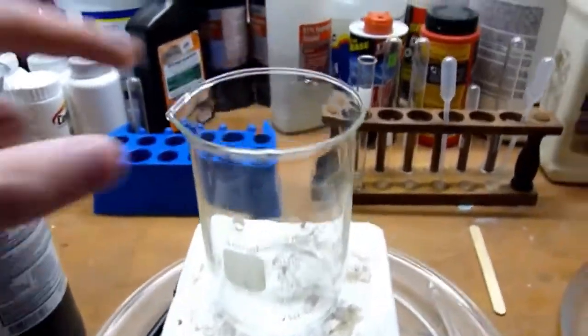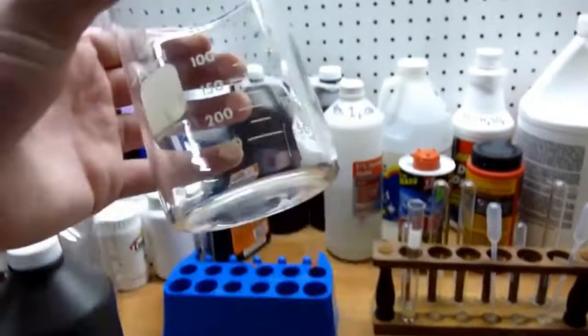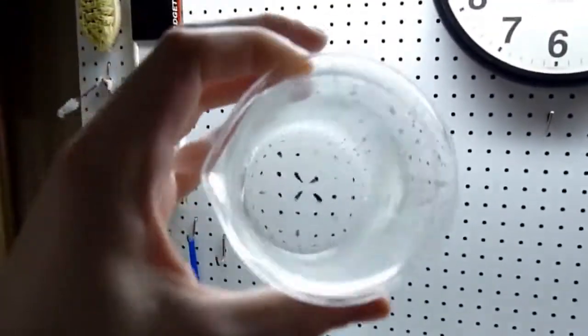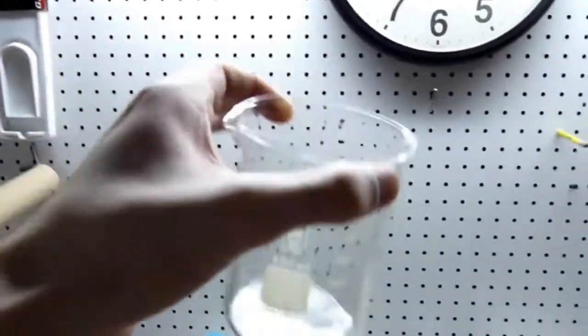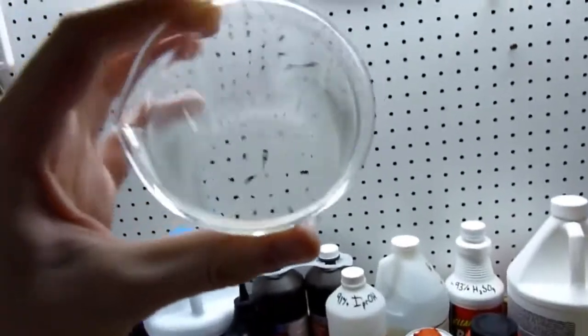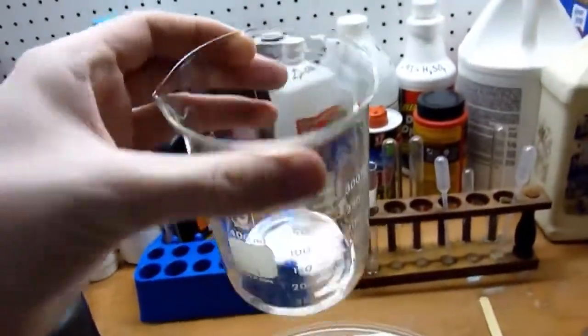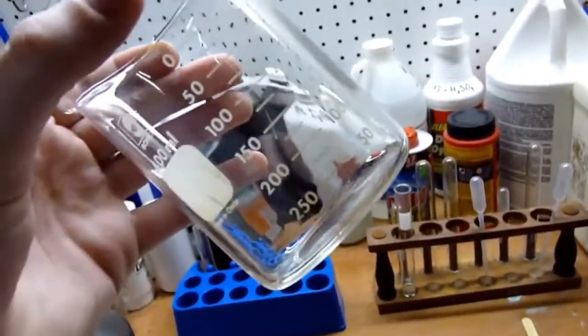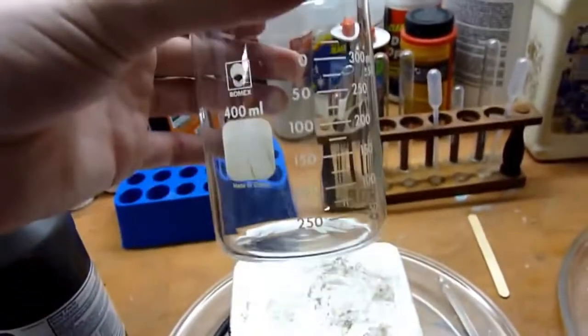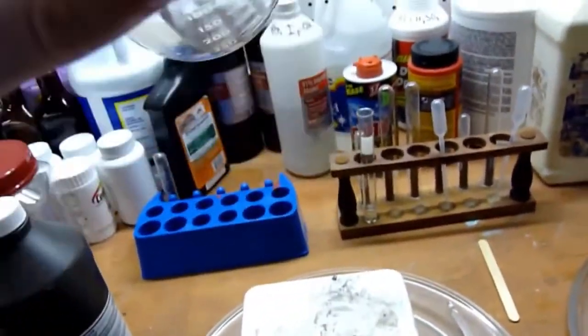The name of the game here is you want an extremely clean beaker. As you can see, I just washed this out. There's a little water in the bottom. But you want it as clean and scratch-free as possible, because every little scratch, every little piece of dirt in there tends to decompose the hydrogen peroxide. So you want it dust-free, absolutely clean.